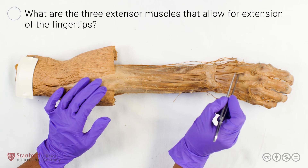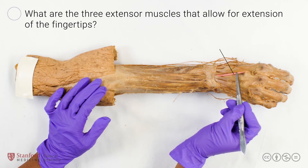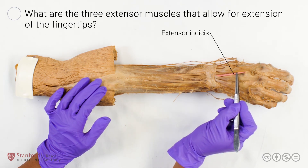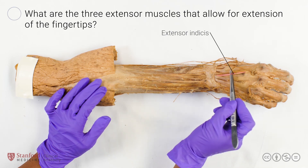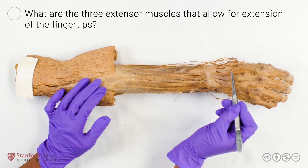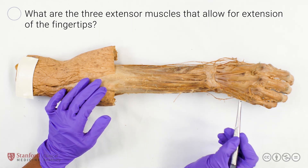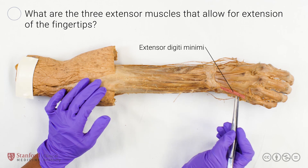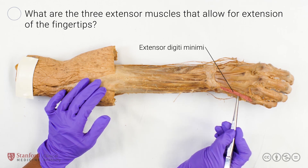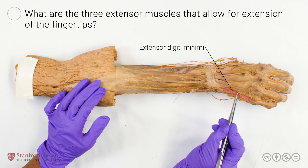This tendon, seen here, is extensor indices. The extensor indices tendon allows for extension of the index finger and always lies ulnar or medial to its extensor digitorum communis counterpart, seen here. Similarly, extensor digiti minimi, seen here, allows for extension of the little finger and always lies ulnar or medial to its extensor digitorum communis counterpart, seen here.